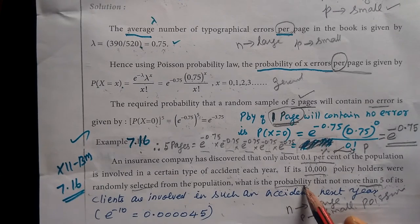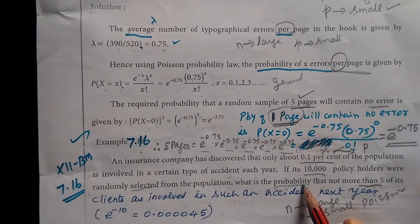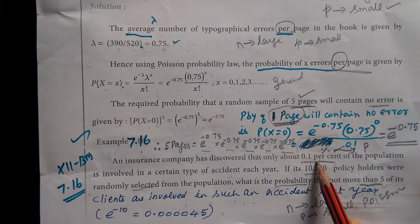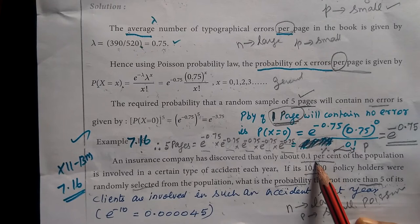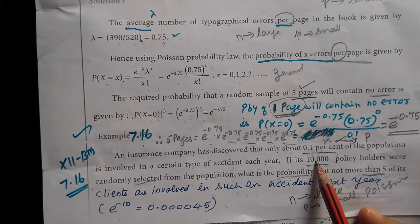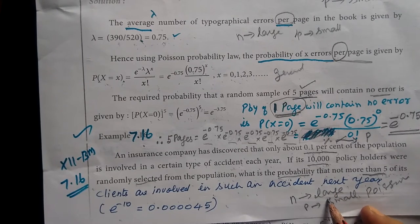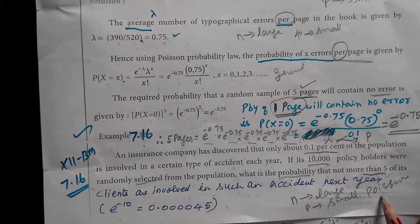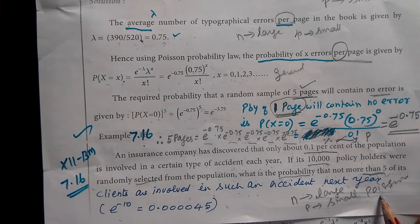Hope you understand. In the question, why do we use Poisson distribution? We must come to know that since the probability value P is small and N is large, we are using Poisson distribution.